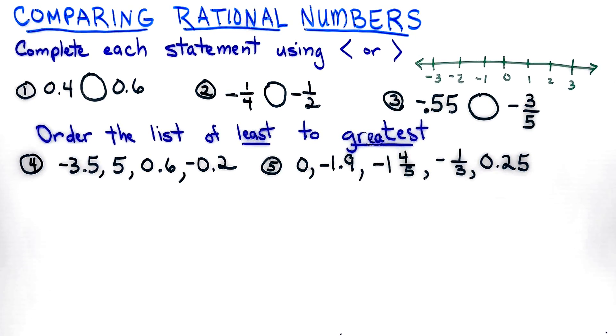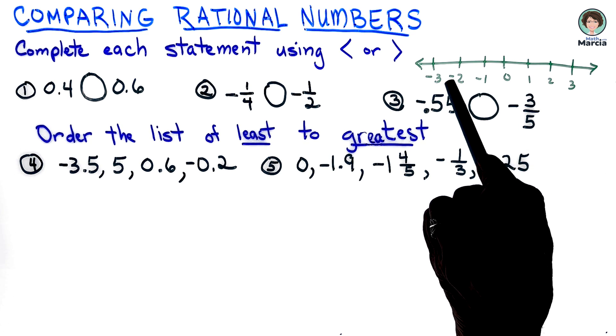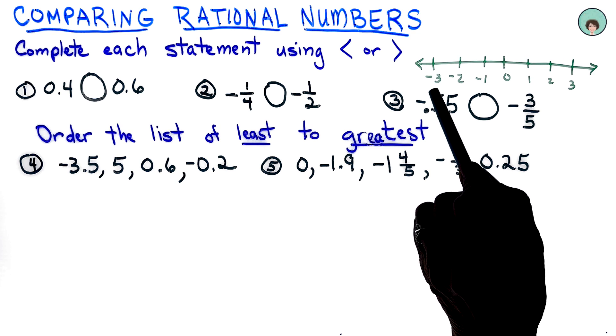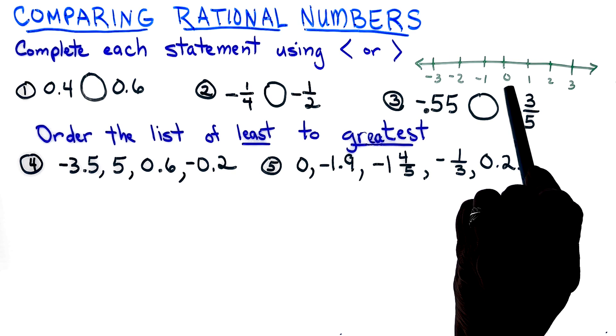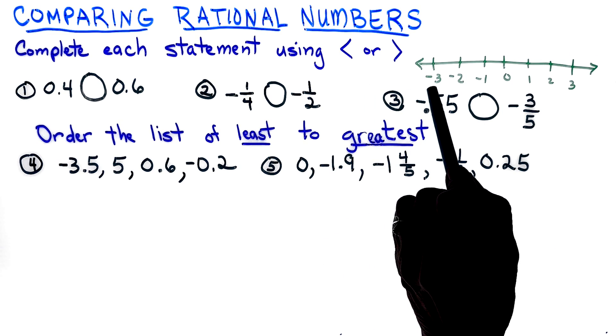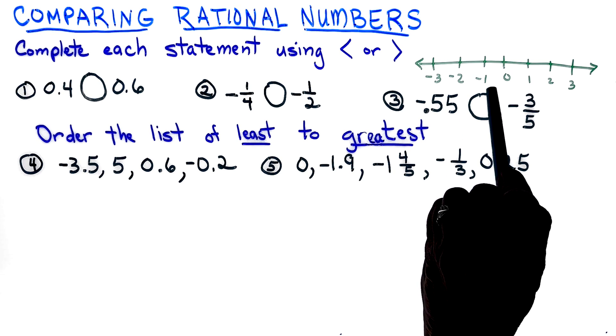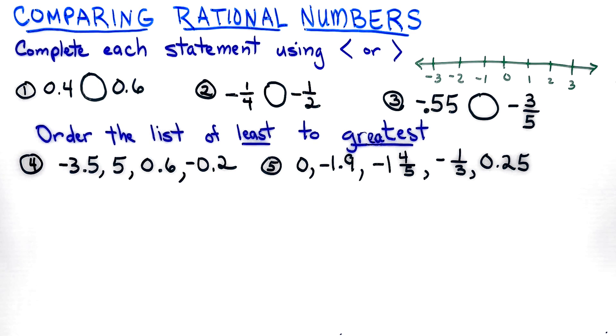For this lesson we're going to be comparing rational numbers. When we think about rational numbers we're going to have positive and negative numbers, so I drew a little number line here for you to see. Remember the smaller the number is with a negative sign, the closer it is to zero. We know that negative three is less than negative one. We're going to need to keep that in mind as we're working these problems.